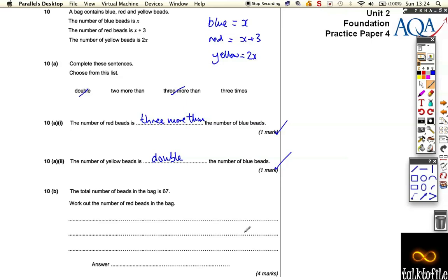Now it says, this one's a 4 mark question, it's not that hard, but if you don't know how to start it, then you get really stuck. So it says the total number of beads in the bag is 67. Work out the number of red beads in the bag.